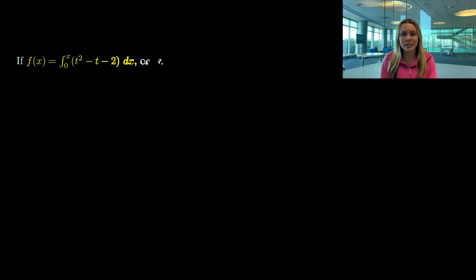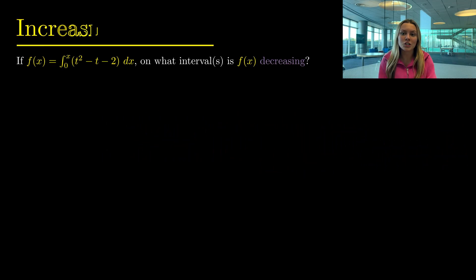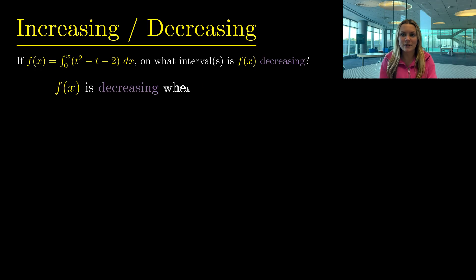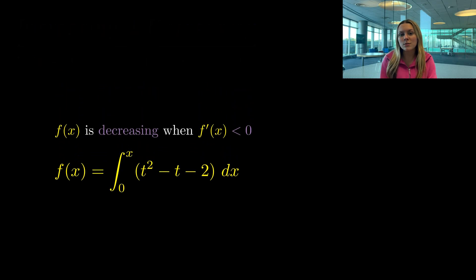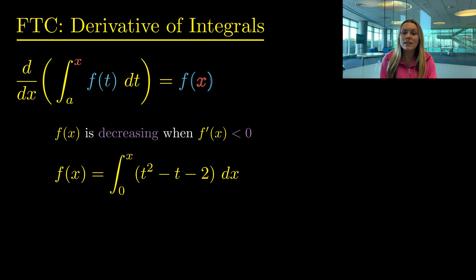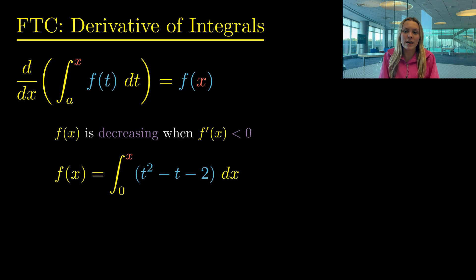For our last example, we are going to see where this function defined as an integral is decreasing. Remember that a function is decreasing when f' is negative. Thus, we should try to take the derivative. And since our function is defined as an integral, we are going to use FTC one last time to take this derivative. So we are going to plug in x into our integrand function of t² minus t minus 2. So f'(x) will just be x² minus x minus 2.